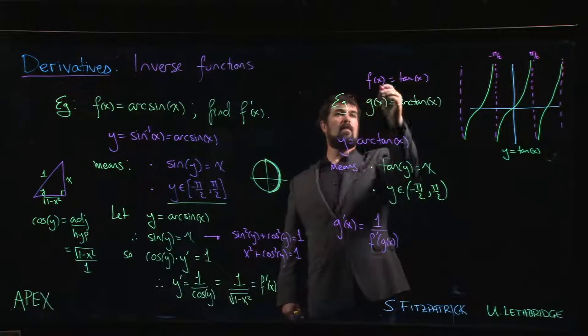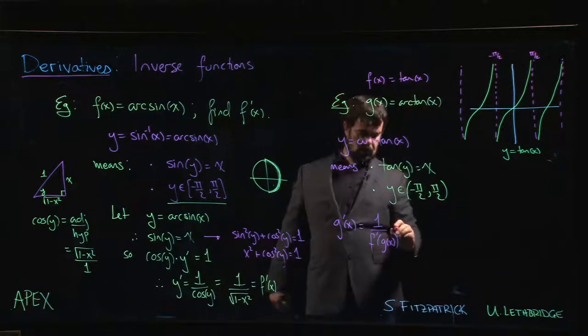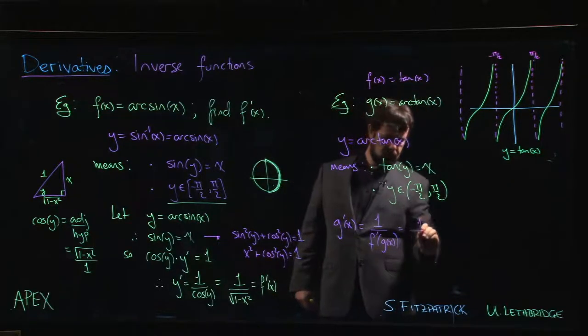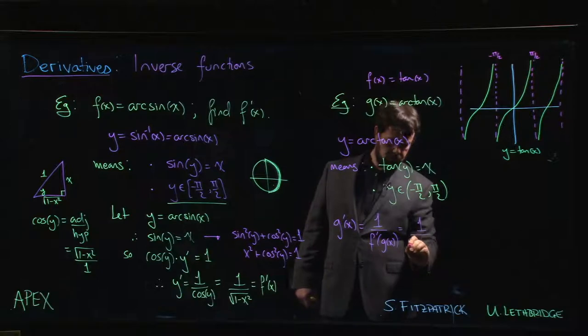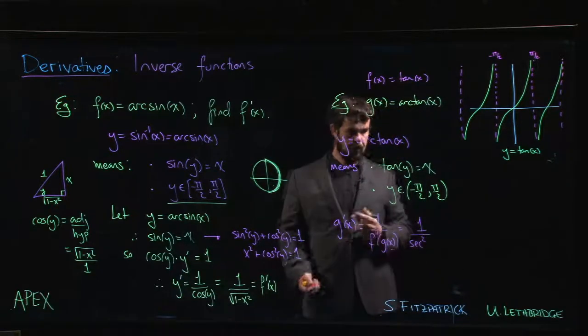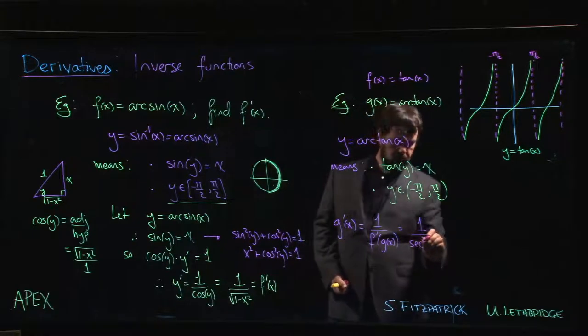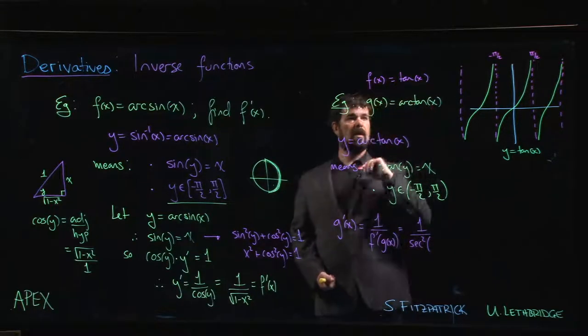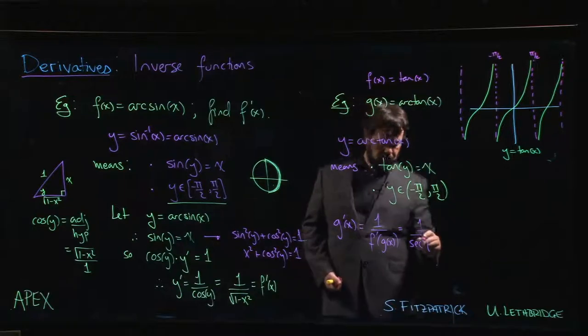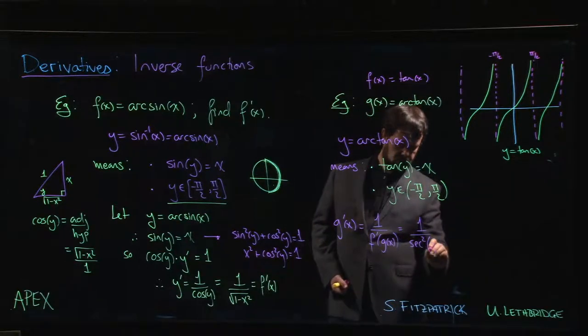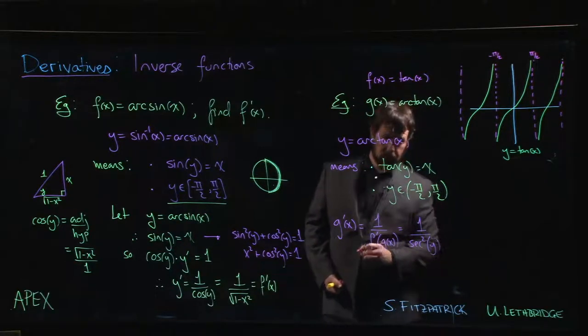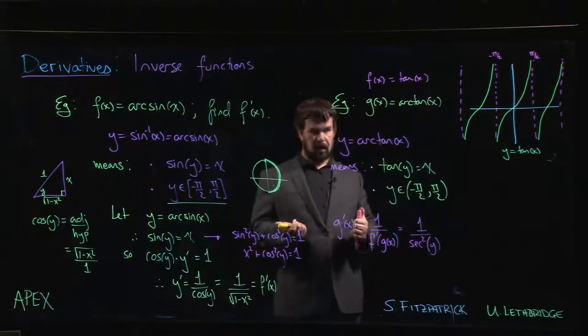Oh, what's f prime? f prime, you'll remember, derivative of tan is secant squared. Okay, so it's secant squared of arctan of x, or if you like, secant squared y. Okay, so what do we do with that?